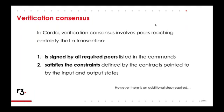Firstly, verification consensus involves reaching certainty that a transaction has been signed by all of the peers listed in the commands — all of the public keys listed by the transaction proposer. All parties associated with those keys should sign the transaction, and we also need to make sure the transaction satisfies the constraints defined in the contract code. Only if both conditions are met can we say it's a valid update that can be committed to the ledger.